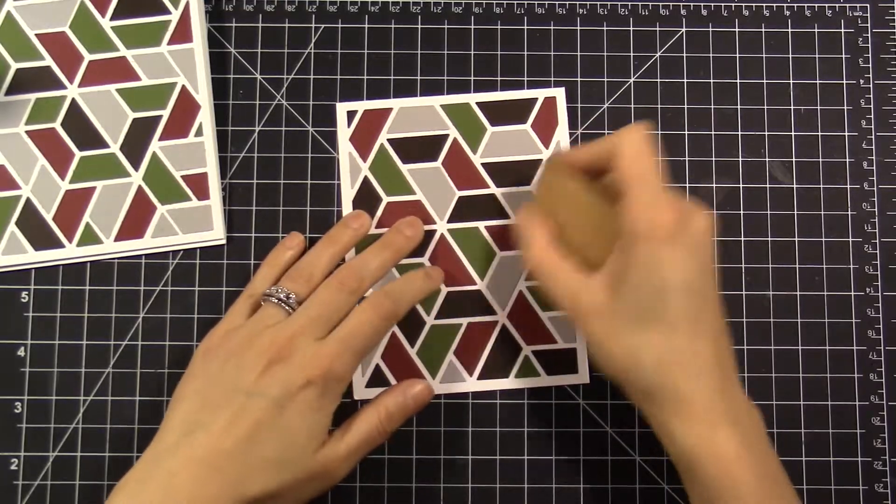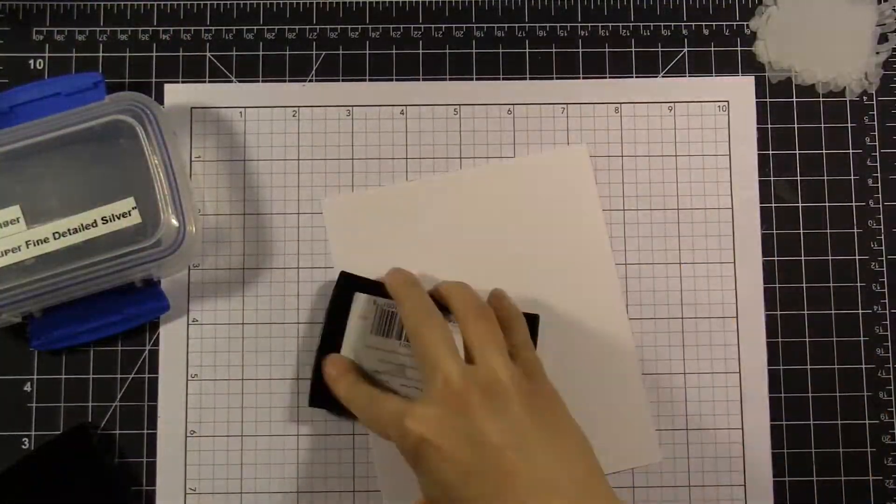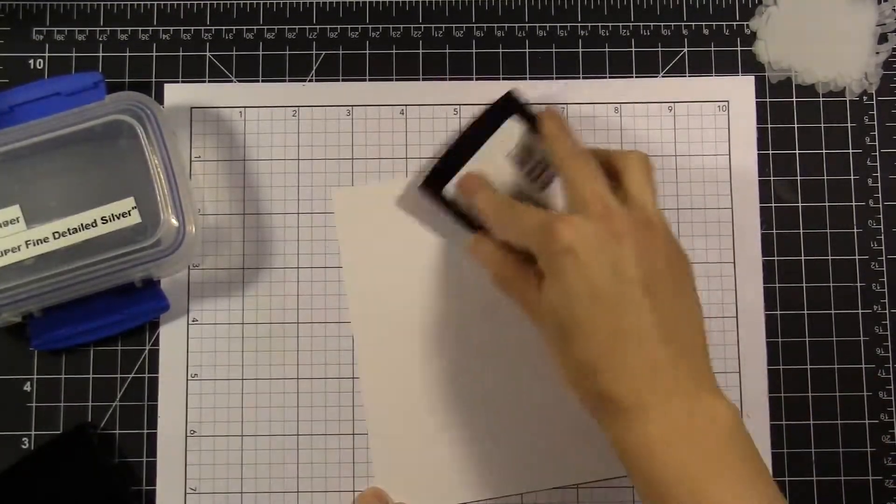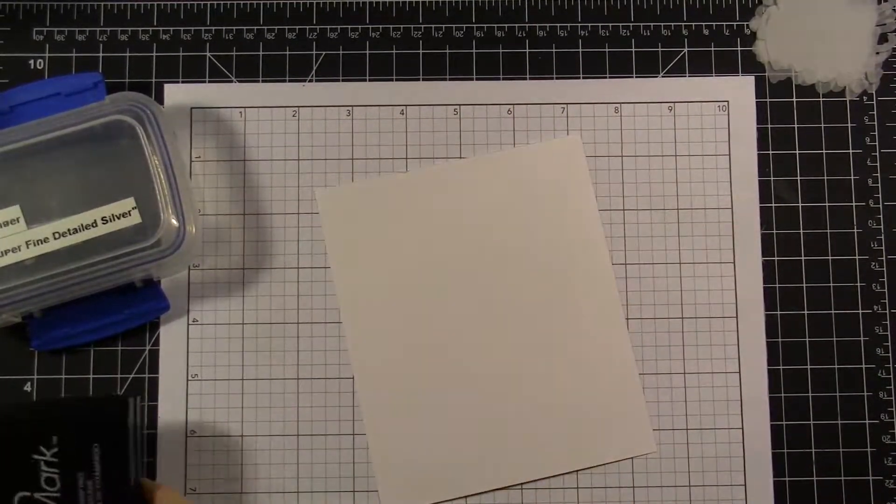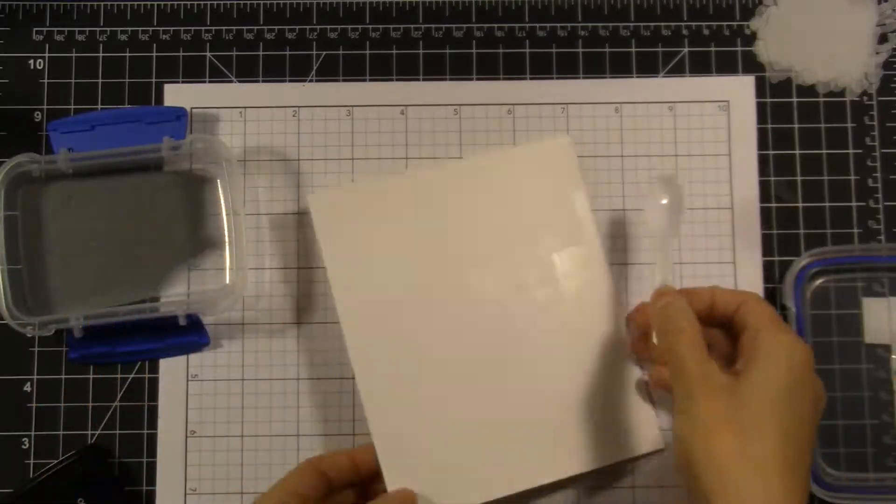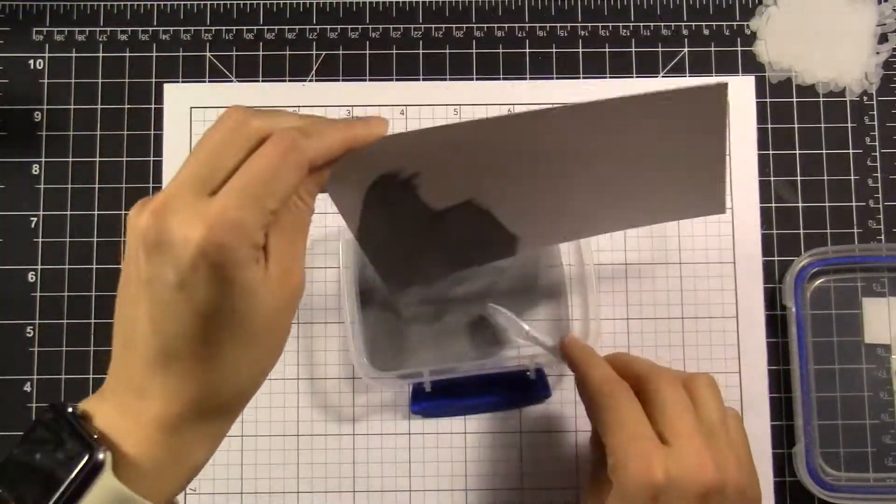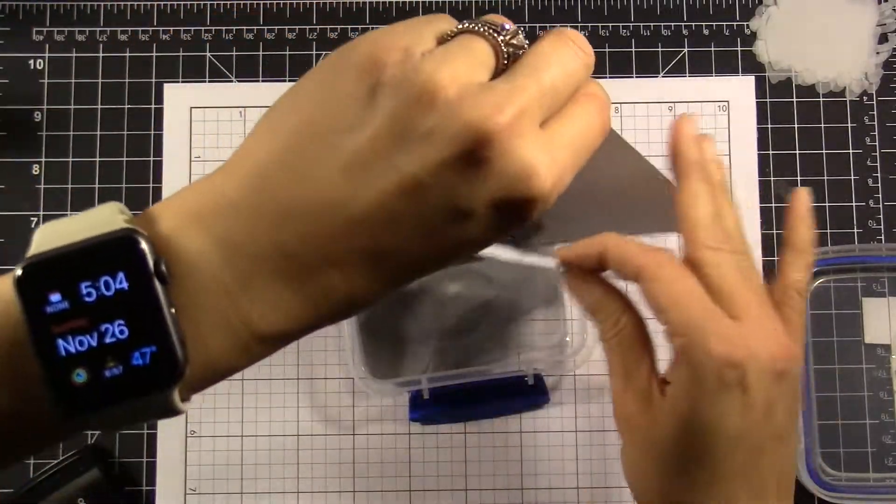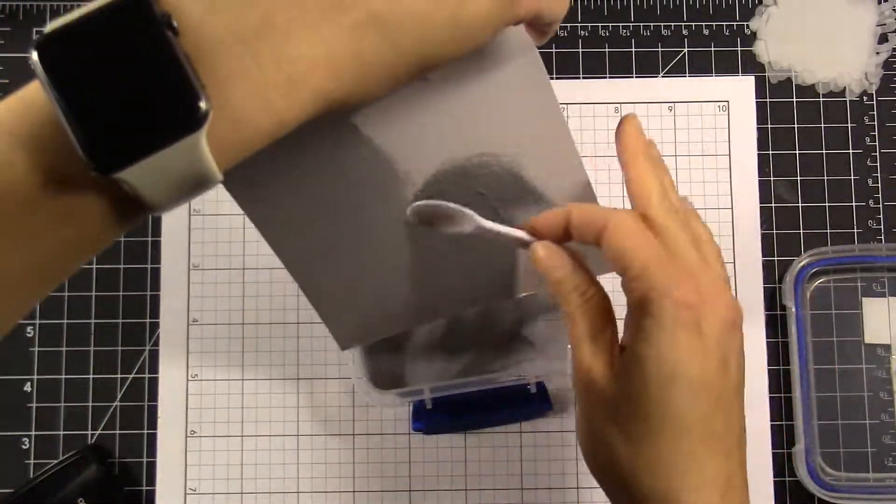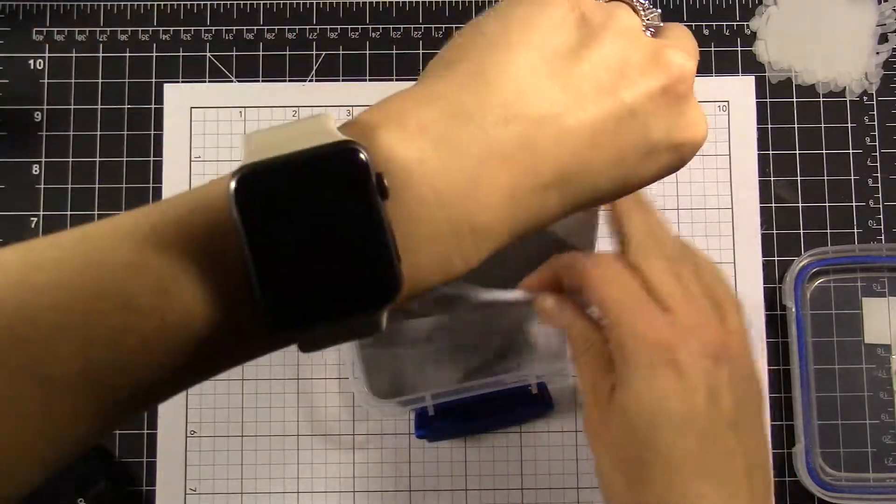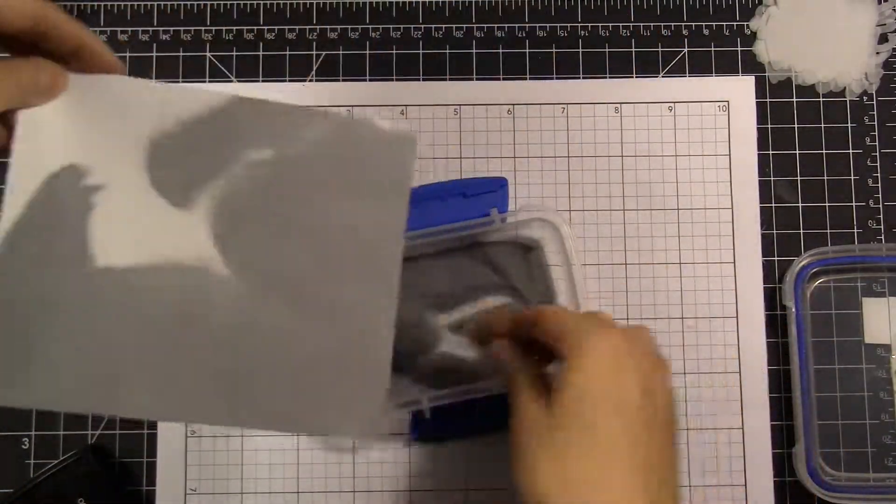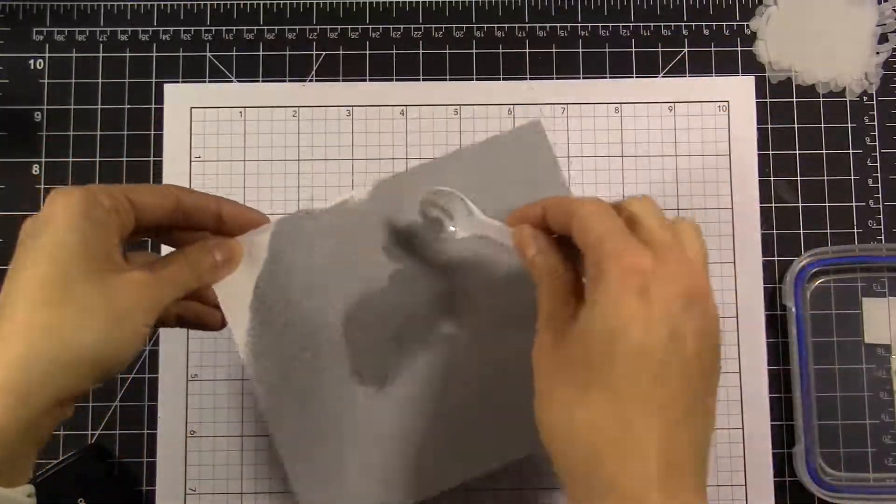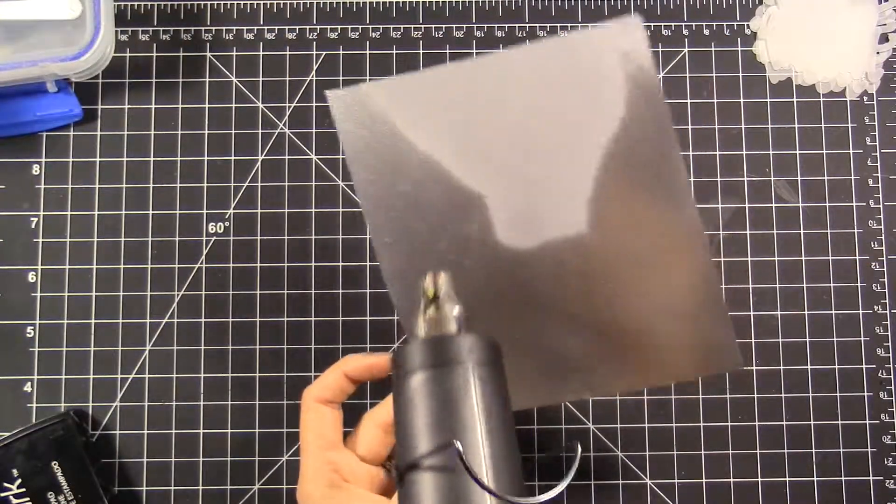Once I've done that, I'm going to move on to the sentiment of my card. What I'm doing is taking some VersaMark ink and just smooshing it onto this piece of white cardstock. I'm then going to take my Ranger's super fine detailed silver embossing powder and coat this whole entire sheet of cardstock. I was thinking about using some glitter paper for my sentiment, but I decided that it was just too flashy for this card. I really wanted the focus to be on that background sweater, so I decided to make my own silver cardstock.